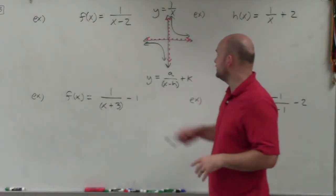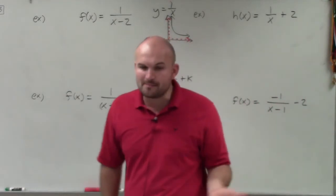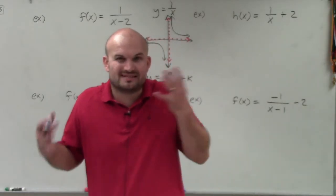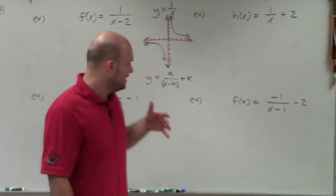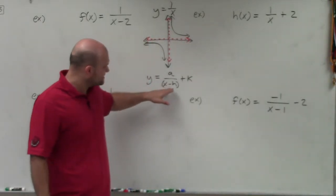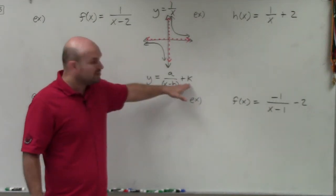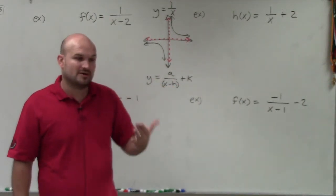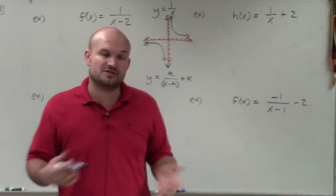Then we have y equals a divided by x minus h plus k. And if you remember, in our families of functions, what we talked about is how does our graph get transformed? Remember, x minus h, that's inside the function. That's going to be shifting your graph left or right. Plus k, that's going to be shifting your graph up or down. And then obviously, a deals with our reflection, as well as our compression or our stretching.